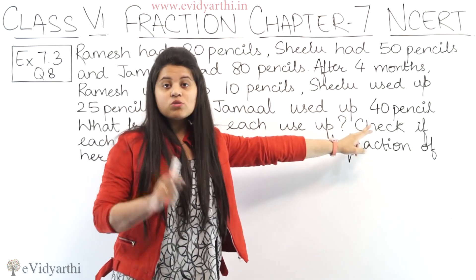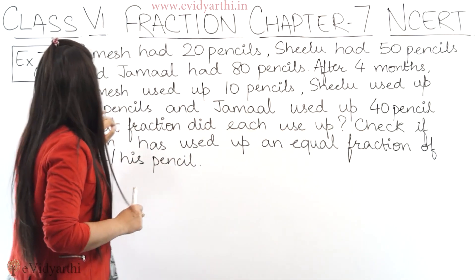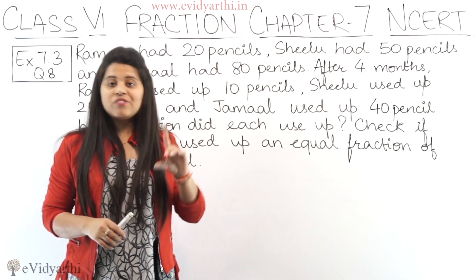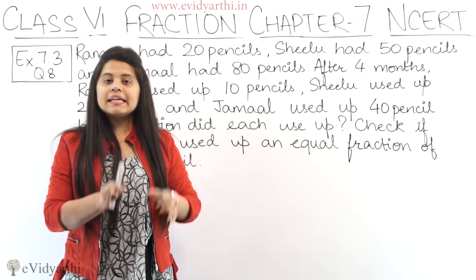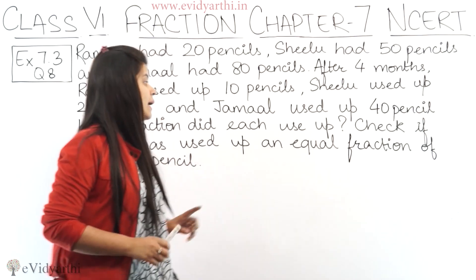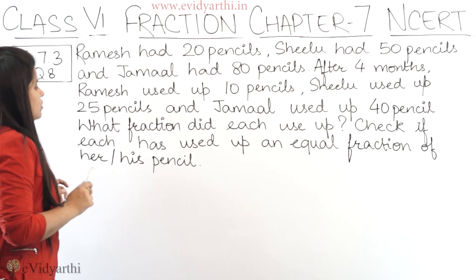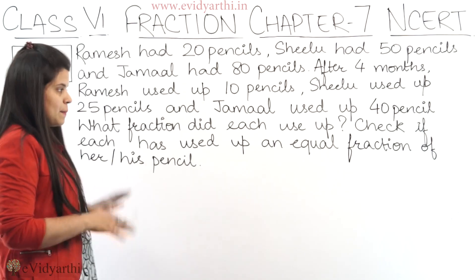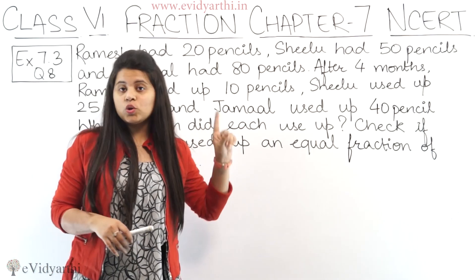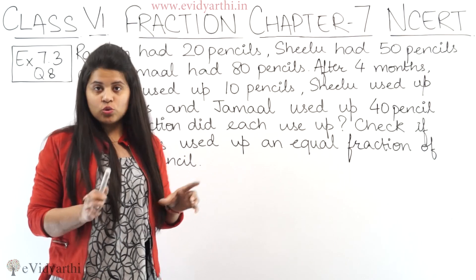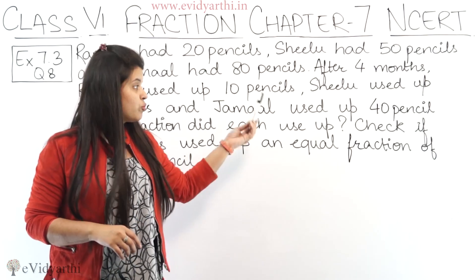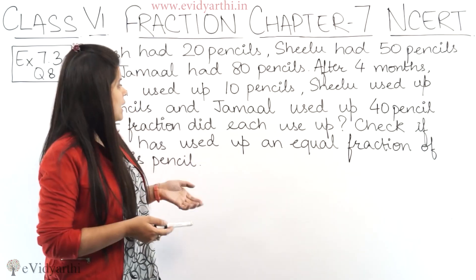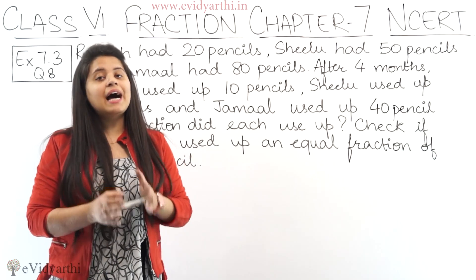And Jamal used 40 pencils. The question asks: what fraction did each use up? First we find the fraction used by each person, then we check if each has used up an equal fraction of their pencils — that is, whether the three fractions are equal or not.